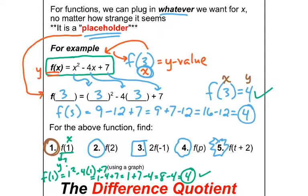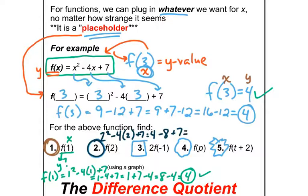Welcome back. Let's try f of 2. Using the placeholder approach, f of 2 should be 2 squared minus 4 times 2 plus 7. That's 2 squared is 4, minus 4 times 2 is 8, plus 7. Putting additions together: 4 plus 7 is 11, minus 8 is 3. So when x is 2, the y value is 3 — the function value is 3.